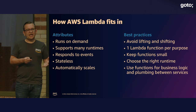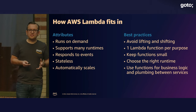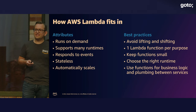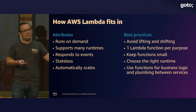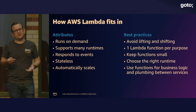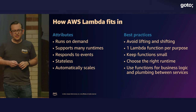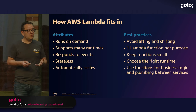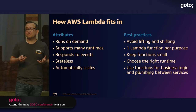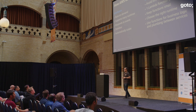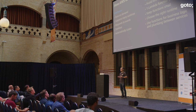Knowing those things, there are some best practices in thinking about how to put this together. One is to avoid lifting and shifting — taking code from your server-based environment and just dropping it into a Lambda function. That'll work, but you're not really getting the benefits of a serverless app. It's often good to build one Lambda function per purpose. You want to keep your functions small, which makes them easier to test and better for reuse. Functions being small can often mean 20 to 50 lines of code, which can seem a bit weird when you first start getting into serverless, but it's kind of normal.